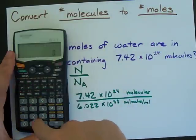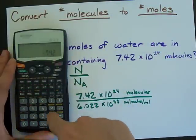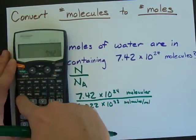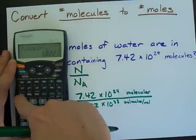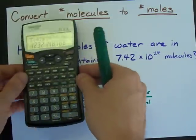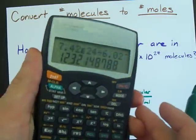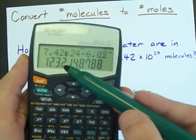Well, that's not right. 7.42 times 10 to the 24 divided by 6.022 times 10 to the power of 23. There we go. That's what I'm talking about right there. You see the answer? It says 12.32.